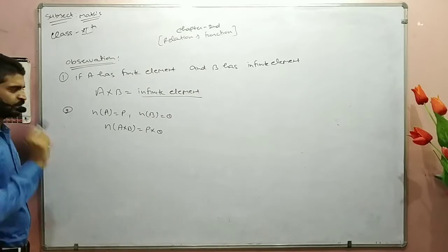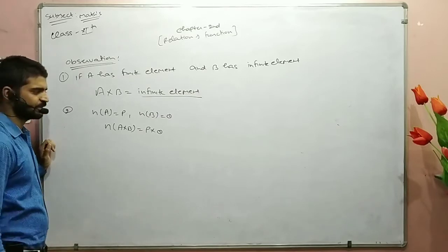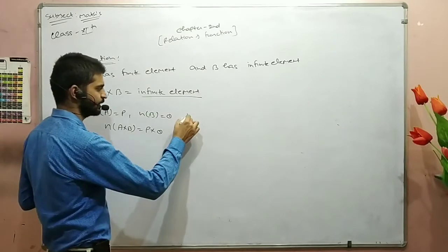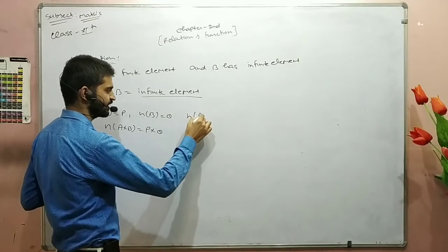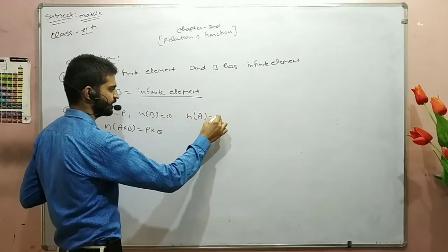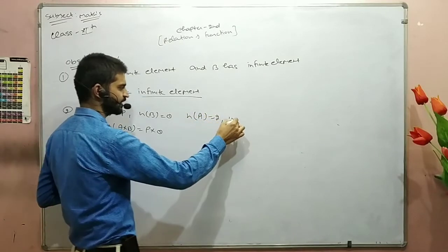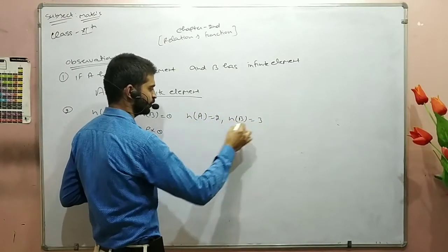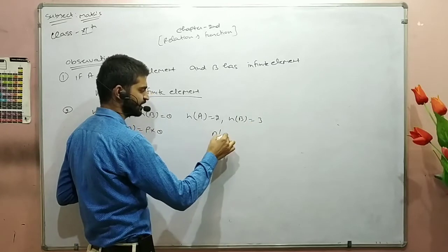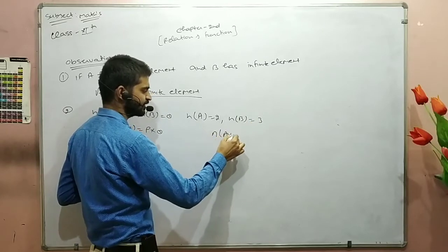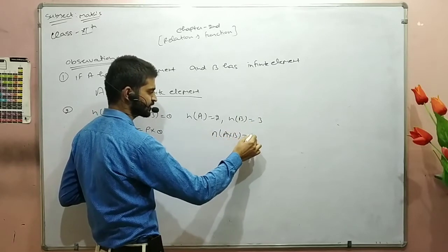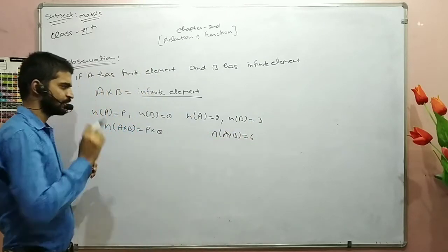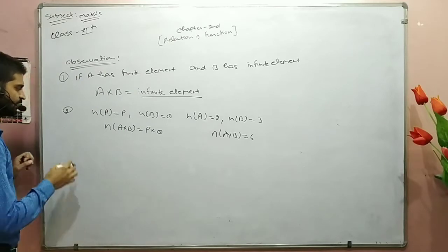So A cross B has 3 elements. For example, A is a set of 2 elements and B is a set of 3 elements. So what is A cross B going to be?